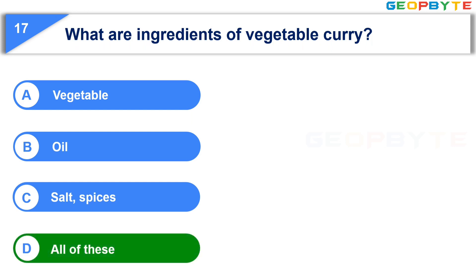And the correct answer is Option D, All of these. That is, Vegetable, Oil, Salt and Spices.